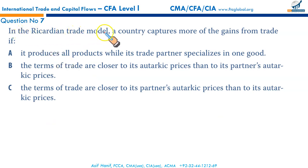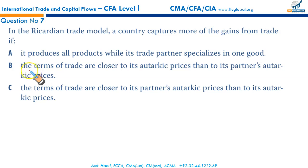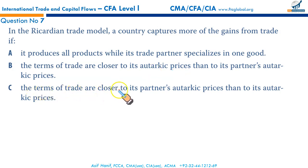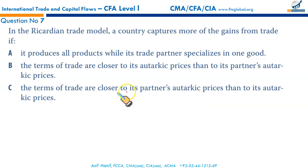Next question: in the Ricardian trade model, a country captures more of the gains from trade if it produces all products while a trade partner specializes in one good — this is an incorrect option. Option B says terms of trade are closer to its autarkic prices than its partner's autarkic prices. Autarkic prices are market clearing prices that just cover the cost of production — selling at your own cost of production provides no benefit, so this is incorrect. Option C says the terms of trade are closer to its partner's autarkic prices than to its own. This means purchasing goods at nearly the cost of production of your trading partner, so the country captures more gains — that makes C the correct option.